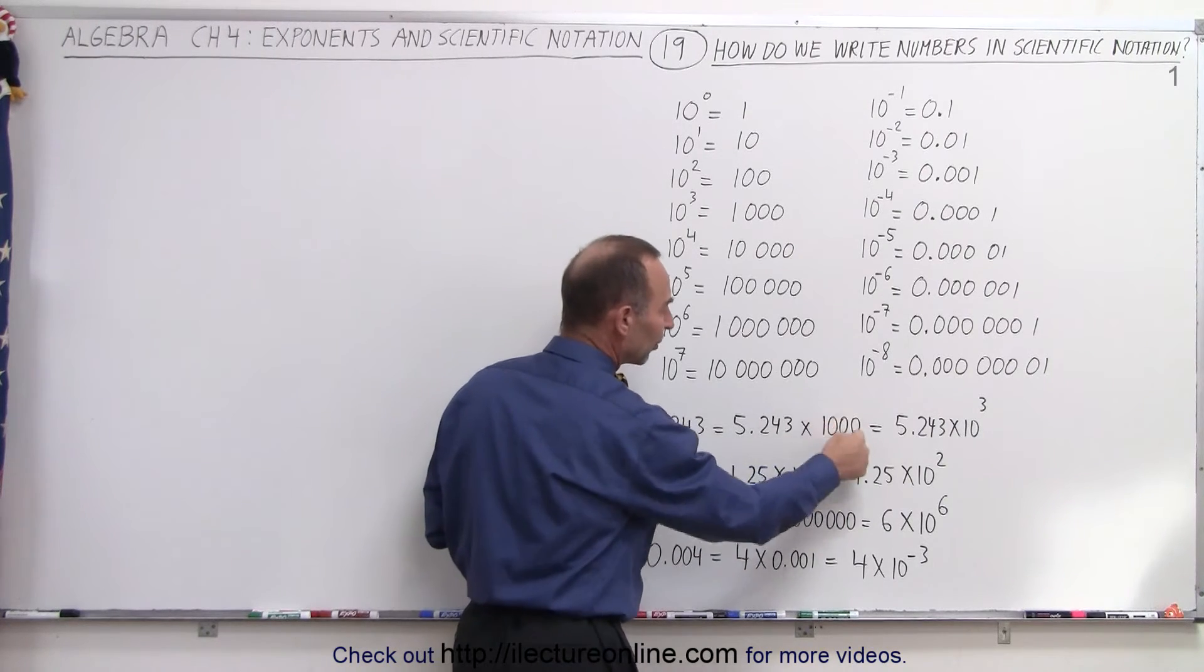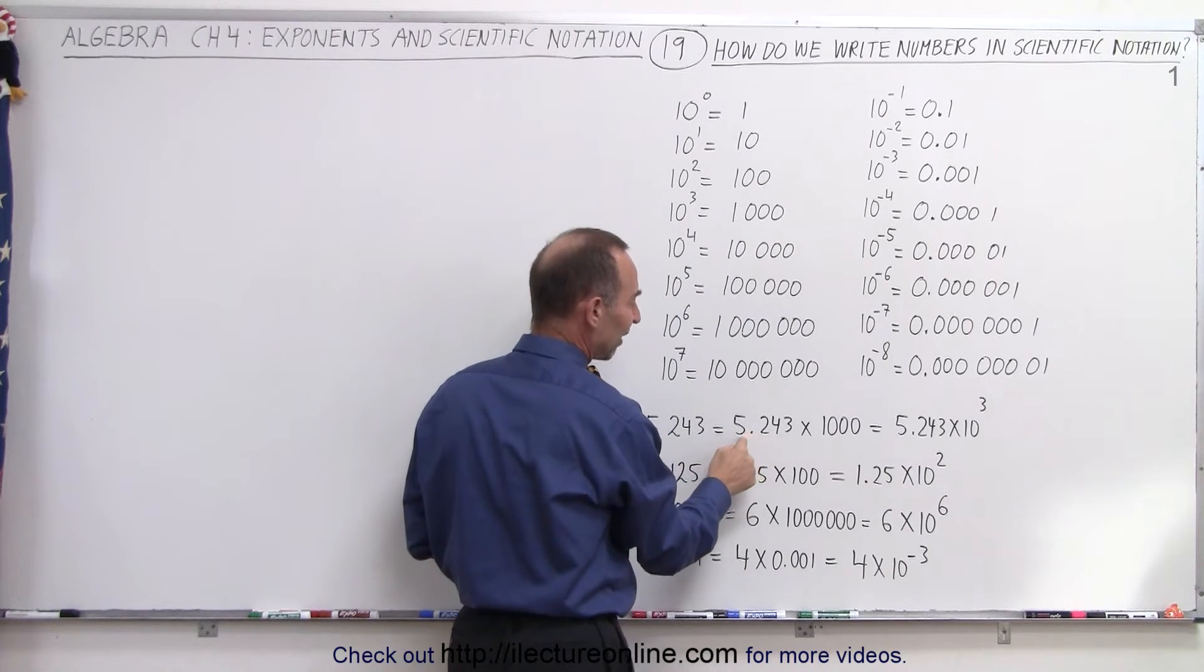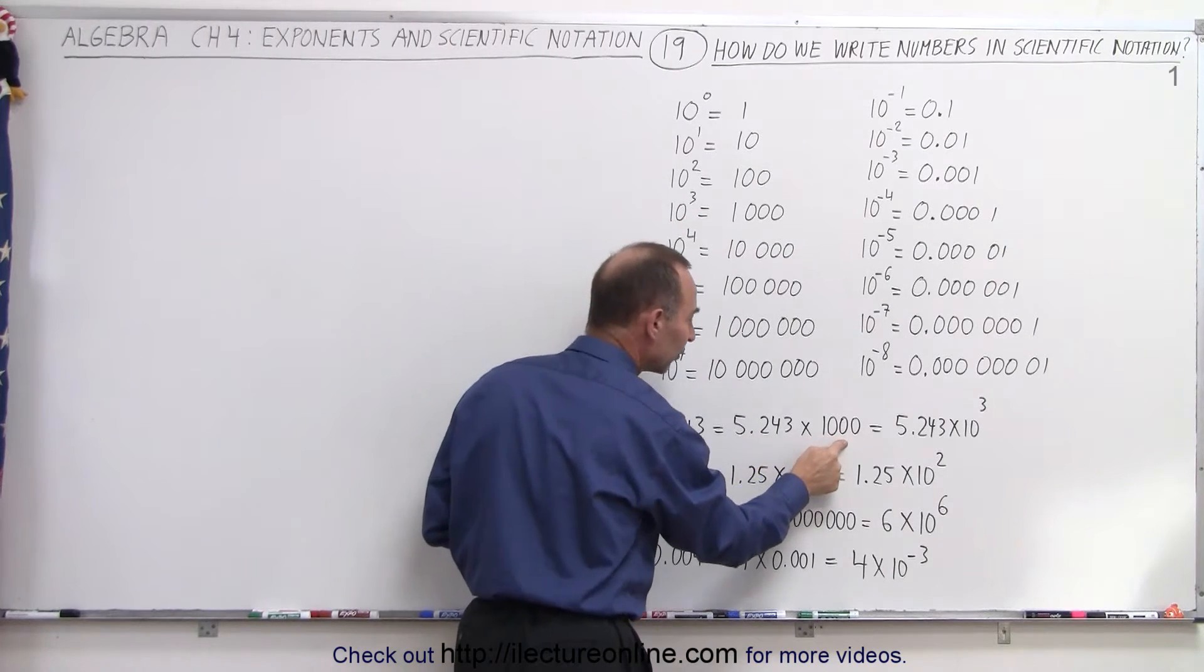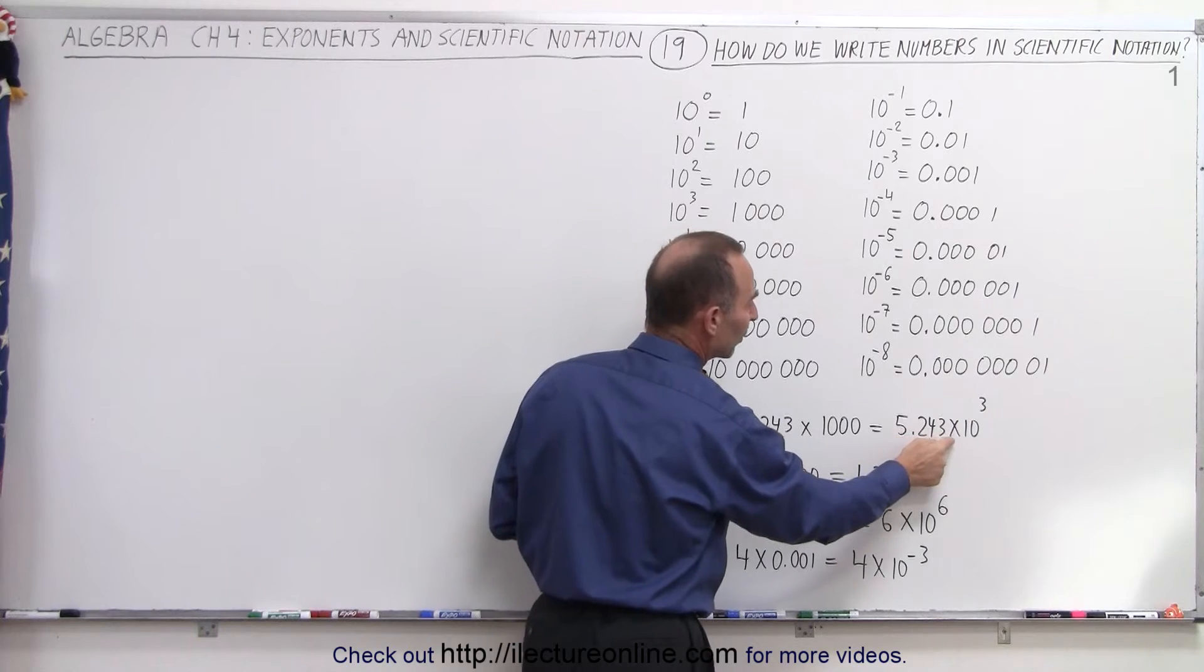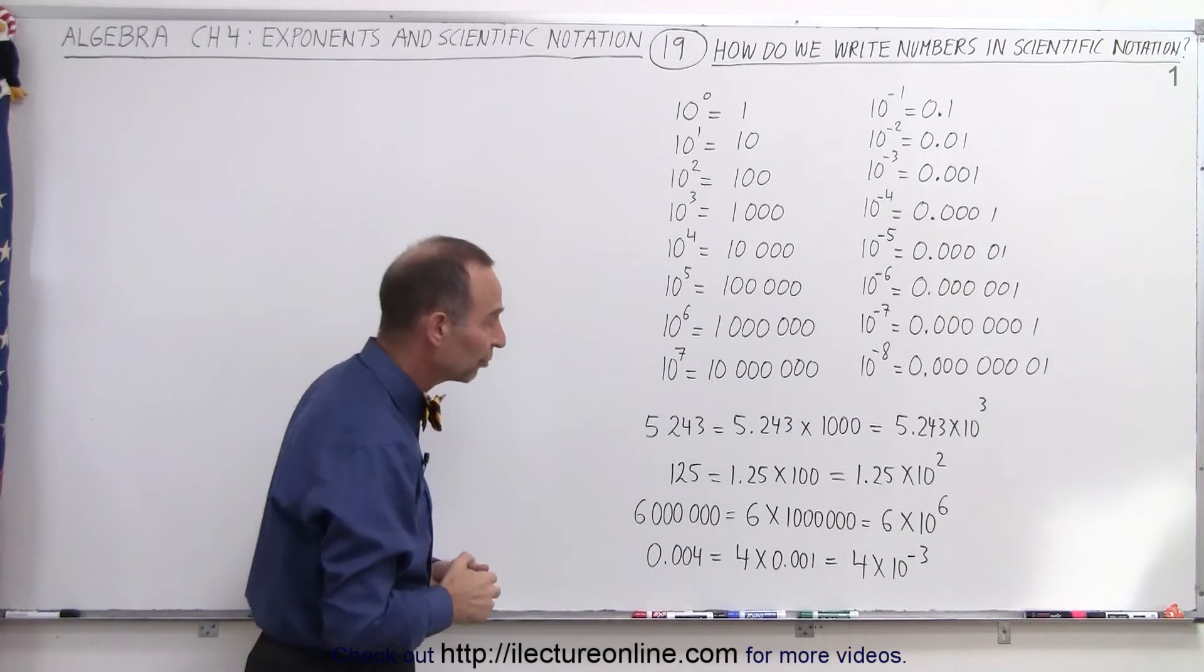Well, the 1,000 can be represented in scientific notation as 10 to the third. So instead of writing 5.243 times 1,000, we write 5.243 times 10 to the third. And now we have what we call scientific notation.